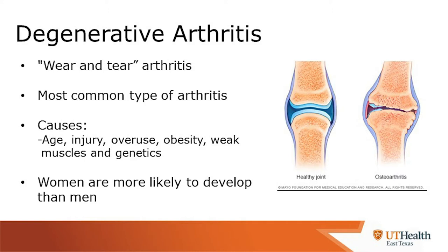Here we see a picture of what degenerative arthritis looks like. You can see loss of cartilage, space narrowing between the two bones, and micro-traumas amongst the two bones as a result of the impact.